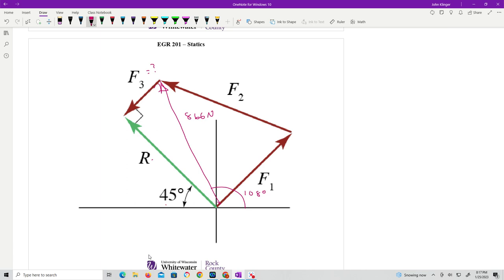Can we solve for this angle here? Let's see. We know angle. Can we solve that? Well, of course we can. We know 108. We know 45. I can solve for that. I'm going to call that alpha. Alpha equals 180 degrees minus 45 degrees minus the 108 degrees. Alpha equals 27 degrees.